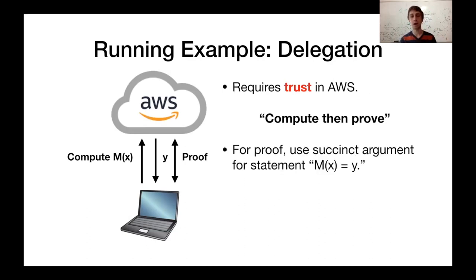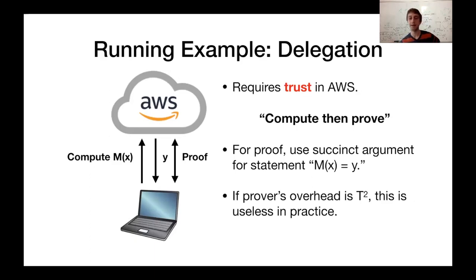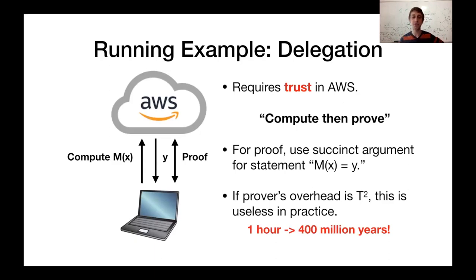This is why it's usually: first compute the output y and then prove this clean statement. But the problem is that if this overhead is some arbitrary polynomial — even t squared — this is essentially useless in practice. As a concrete example, if this computation took 2^40 steps, this will take about an hour on most computers. Whereas squaring this, doing 2^80 steps, will take nearly 400 million years. So it's just not worth it to trust in the math at that point if it has such a huge overhead.